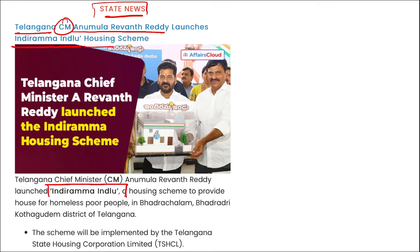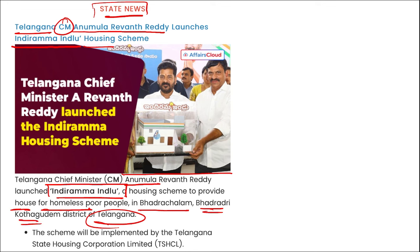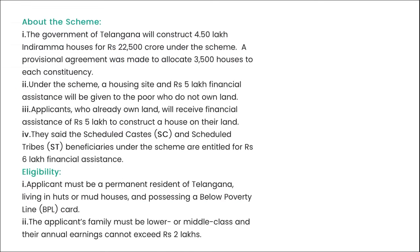Telangana Chief Minister Anumula Revanth Reddy launched the Indiramma Illu housing scheme to provide houses for homeless people in districts like Bhadrachalam Bhadradri Kothagudam. The government of Telangana will construct 4.5 lakh Indiramma houses at a cost of ₹22,500 crore, with 3,500 houses allocated to each constituency.